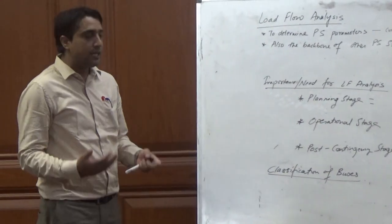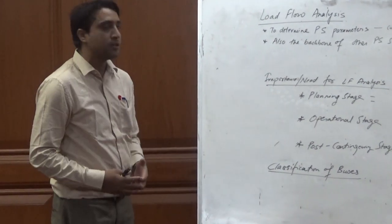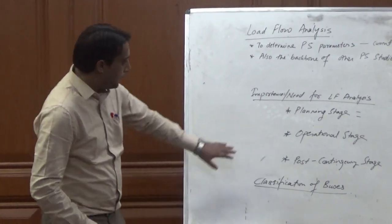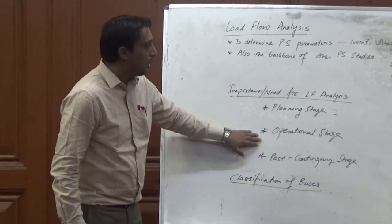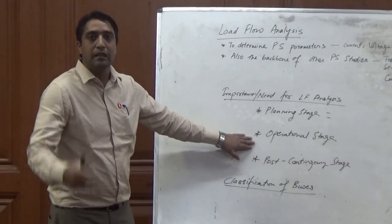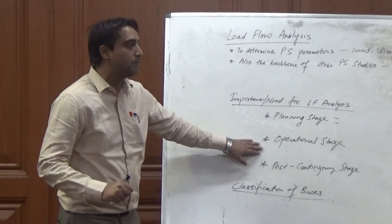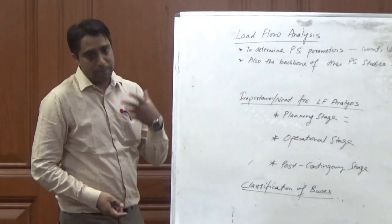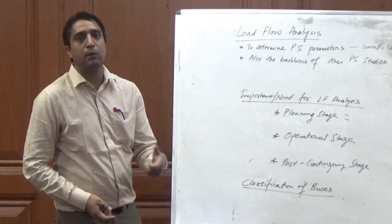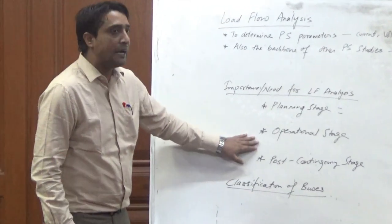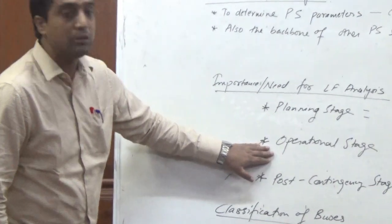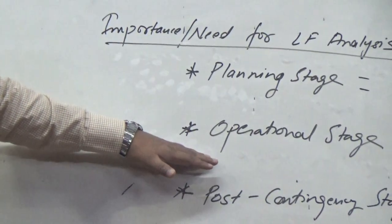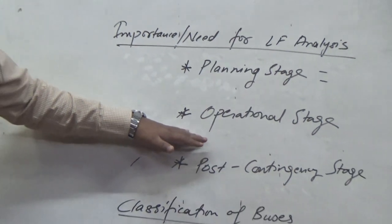In the operational stage, pertinent up-to-date information of the system is obtained from substations. The load flow algorithms are used to determine the current operating point of the power system. If there are any violations in the system — whether there is any overloading in terms of real power flow through the lines — that is assessed during operation. Load flow analysis helps us determine the operating condition of the system.